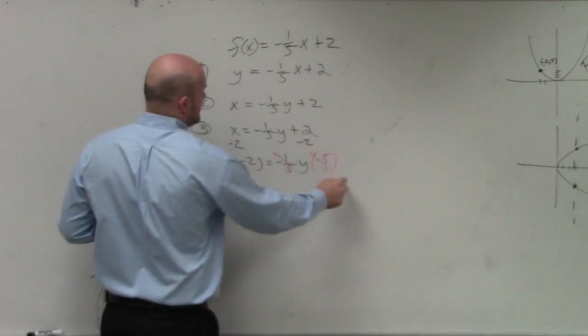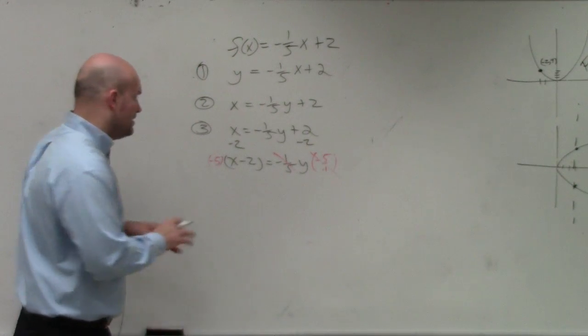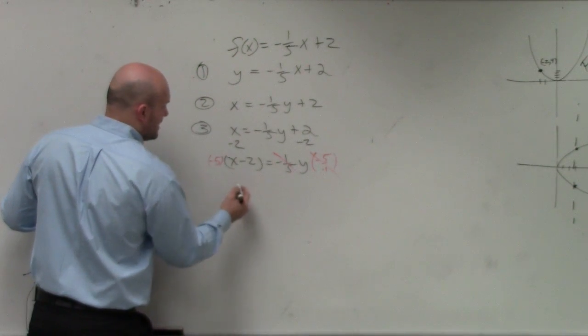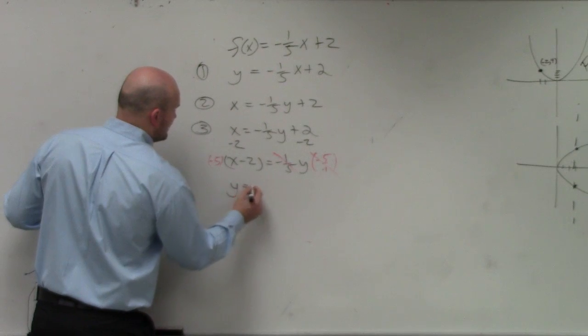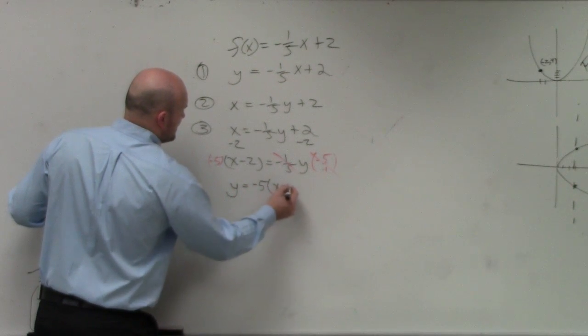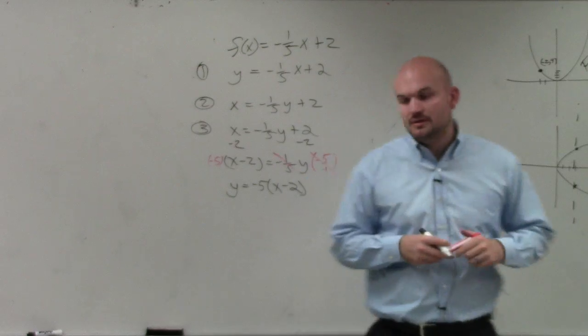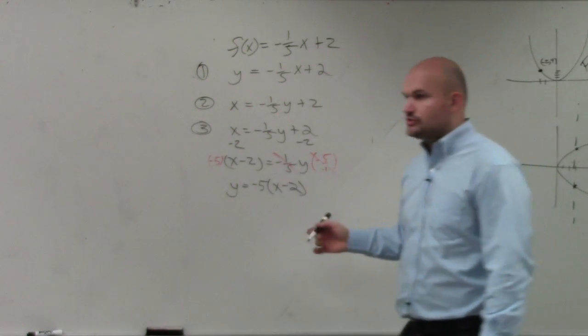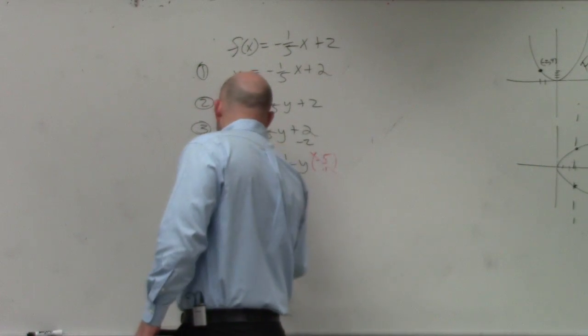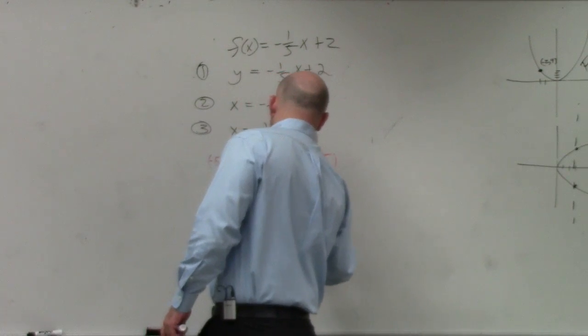Any number multiplied by a reciprocal is going to multiply to 1. I'll solve for the y on the left-hand side. So I have y equals negative 5 times x minus 2. And then, obviously, you could go ahead and distribute the negative 5. So you have y equals negative 5x plus 10.